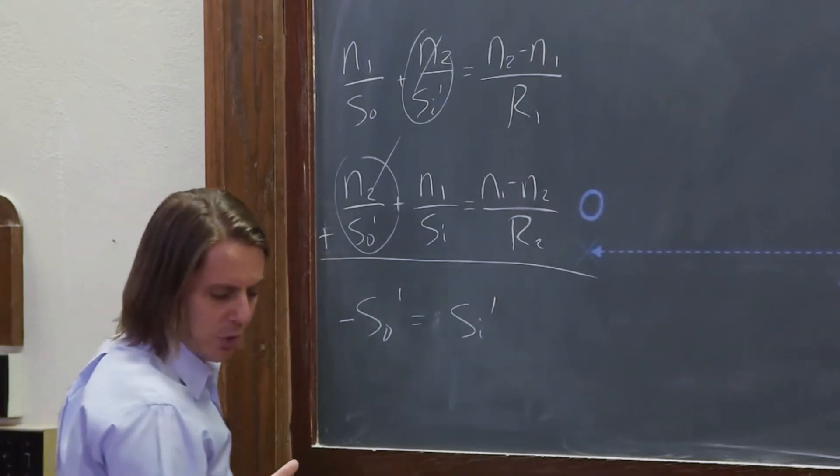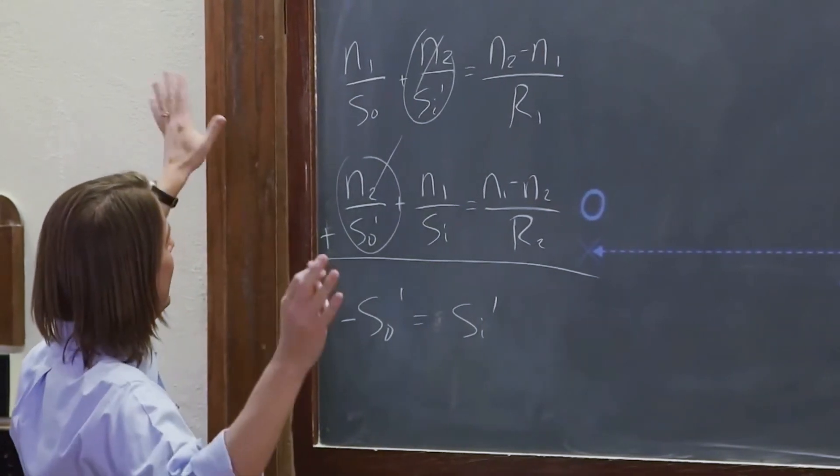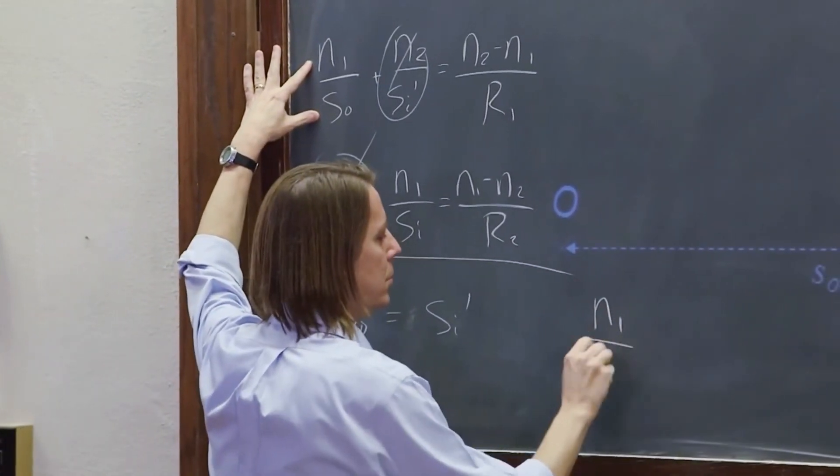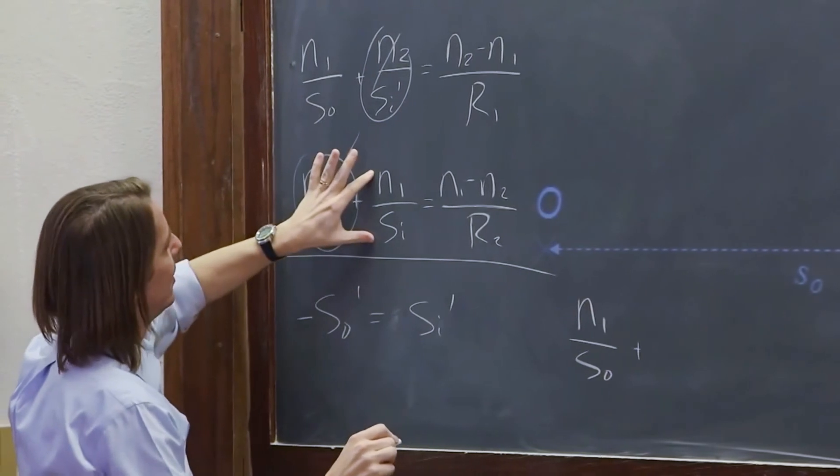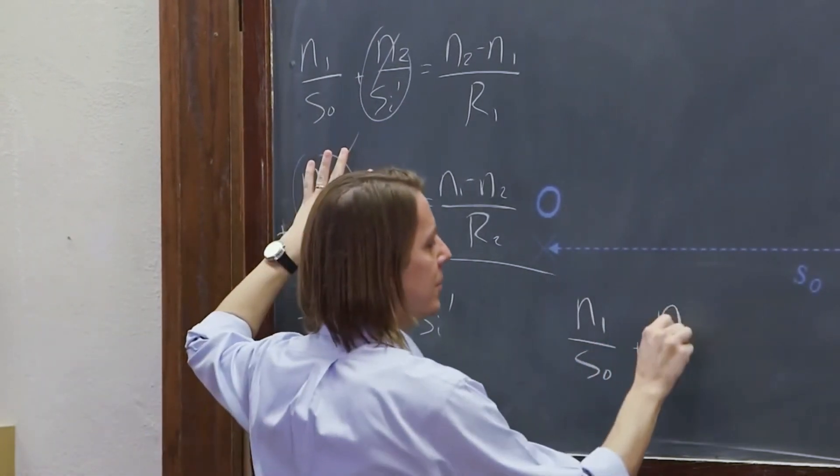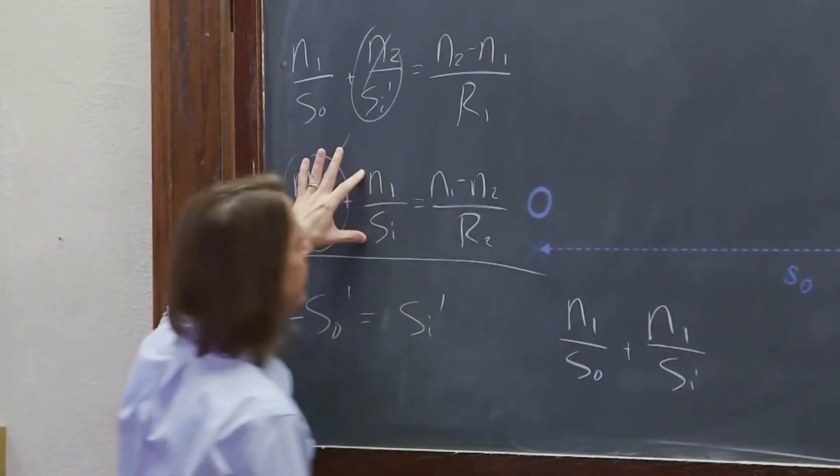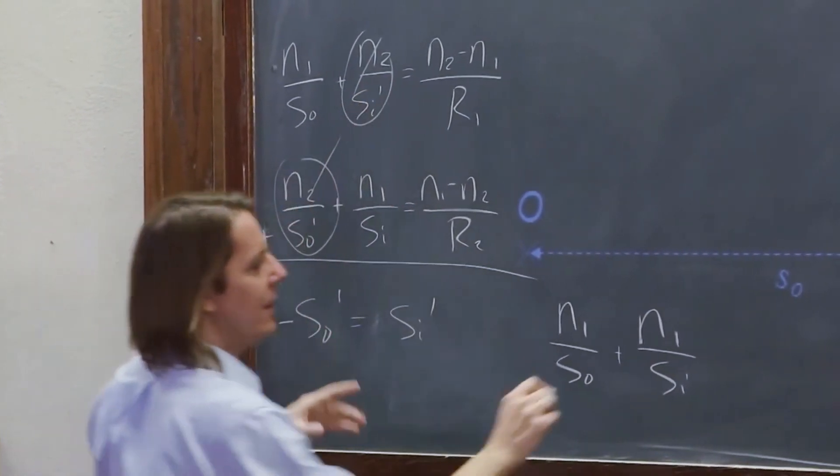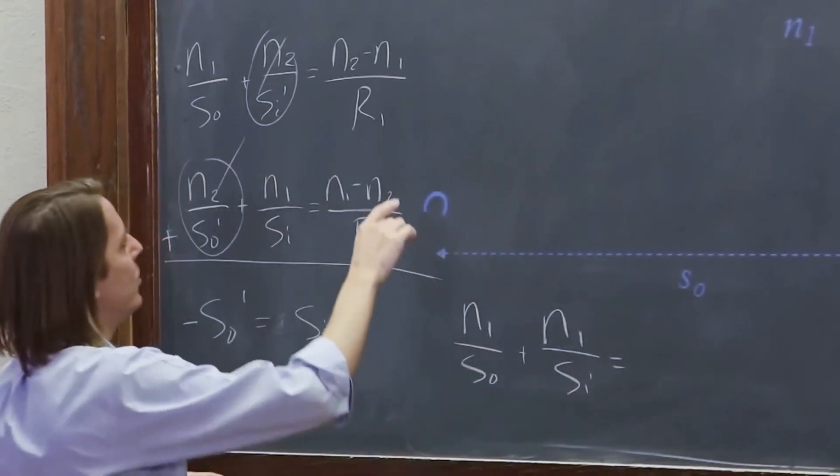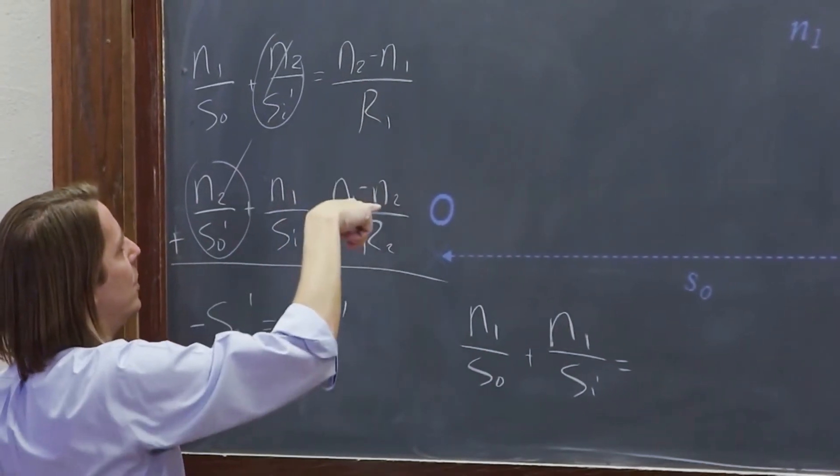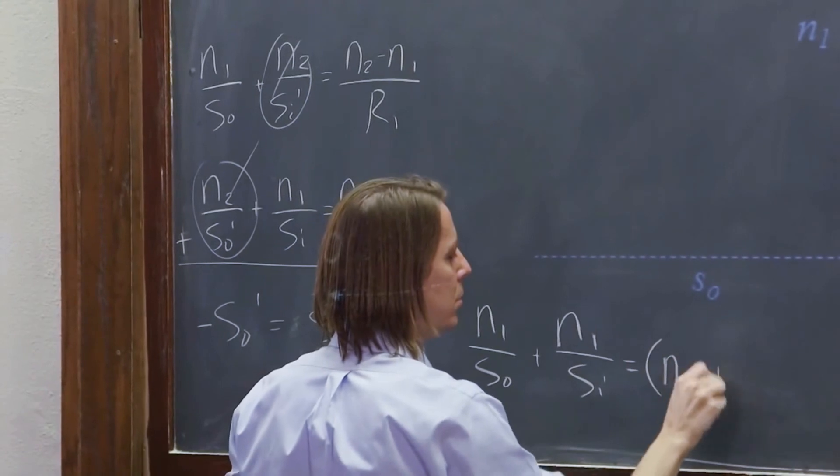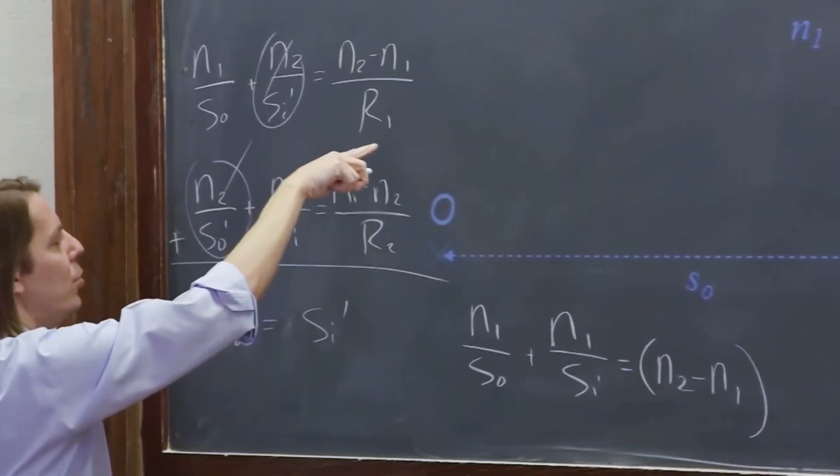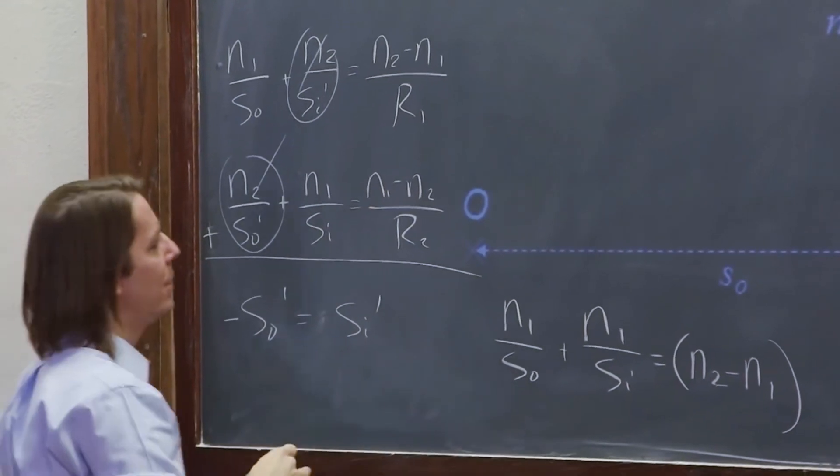And we're going to end up with whatever is left, N1 over the object distance plus N1 over the image distance and that's going to be equal to this side when we add these two and this is going to be equal to, let's see, we can pull out an N2 minus N1 and that's going to leave us 1 over R1 and then there's a negative sign here, minus 1 over R2.